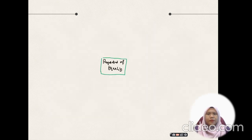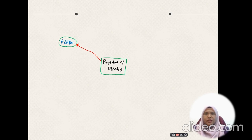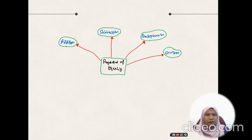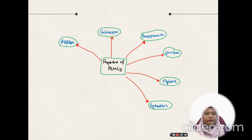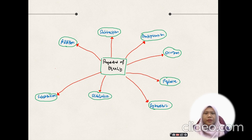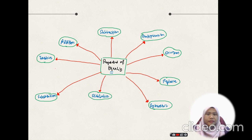The properties of equality has nine properties involving: addition property of equality, subtraction property of equality, multiplication property of equality, and division property of equality. These four correspond to the four basic arithmetic operations. The other five are reflexive, symmetric, distributive, substitution, and transitive properties of equality. All of these properties involve an equal sign in the mathematical statement.